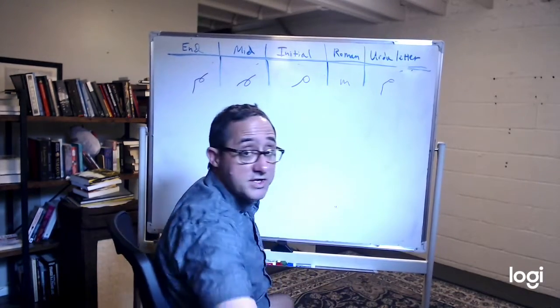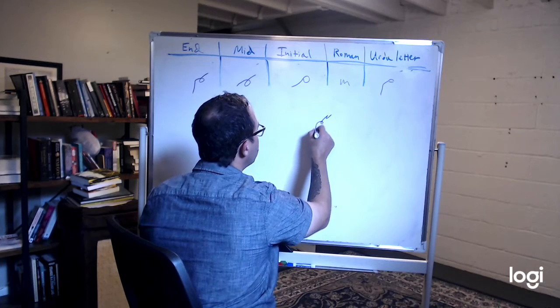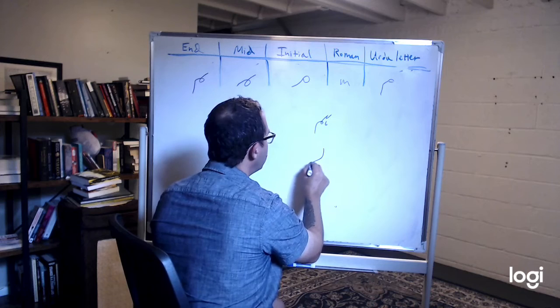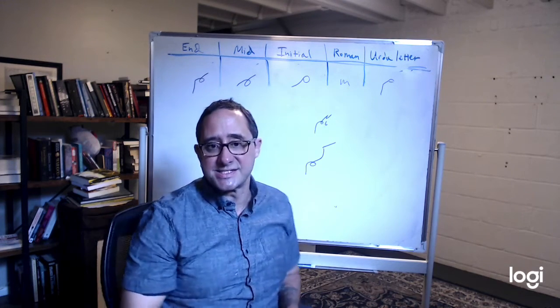And what is it at the end? Here's an easy one. I'll give you two. Hum - this means we. And kam - which means less. Kam.